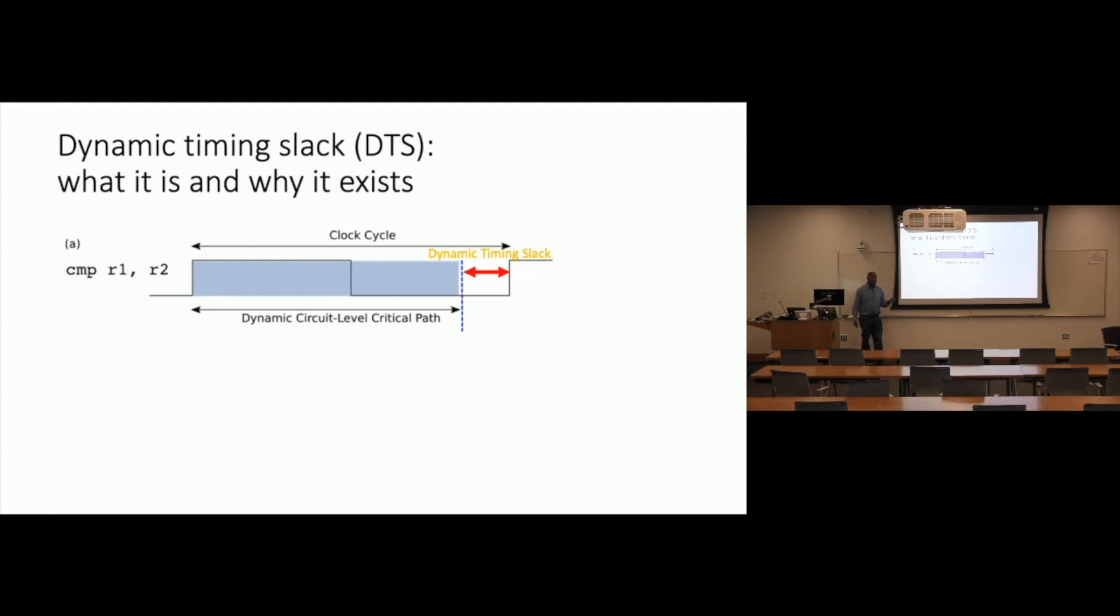Recent work has shown that adaptive PLLs can be used to stretch or shrink the clock period to fit the available DTS. But the data used by instructions has a significant impact on the amount of timing slack available. Moreover, slight variations in the code can create additional dynamic timing slack.